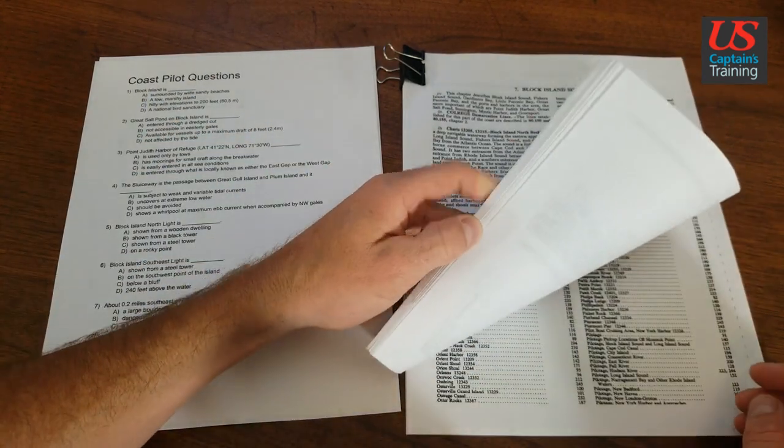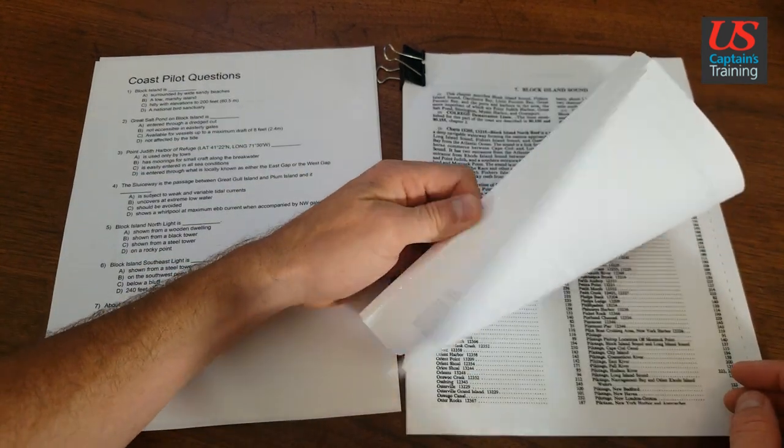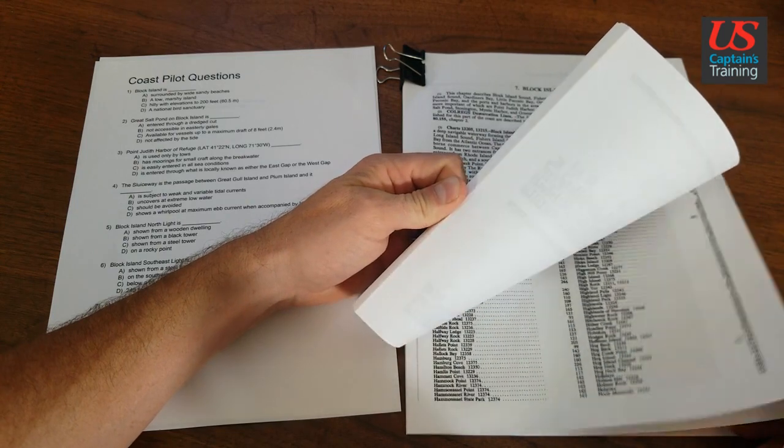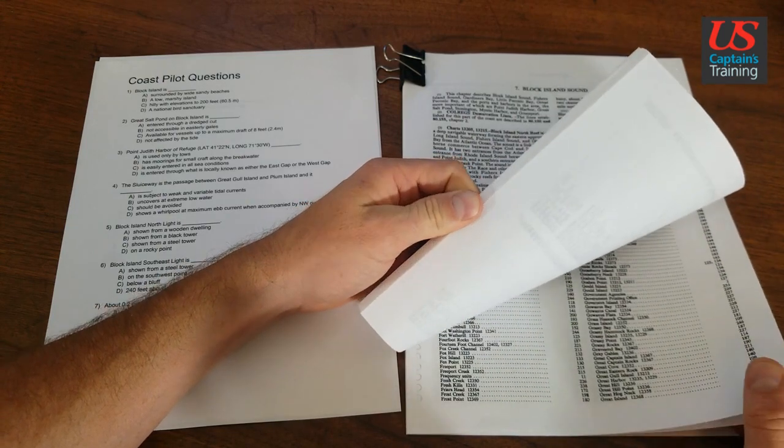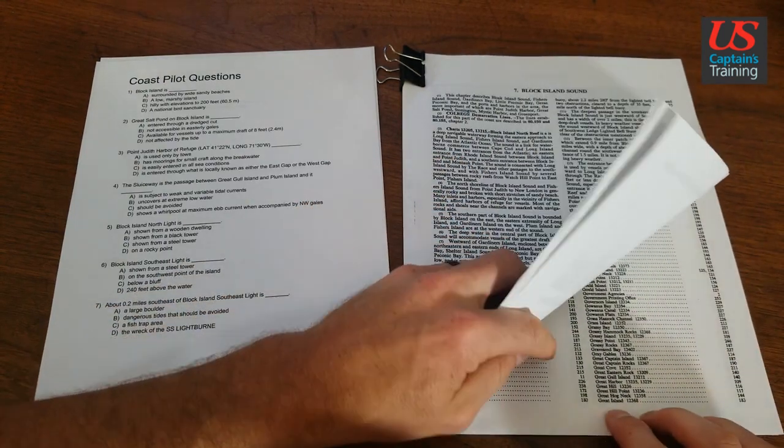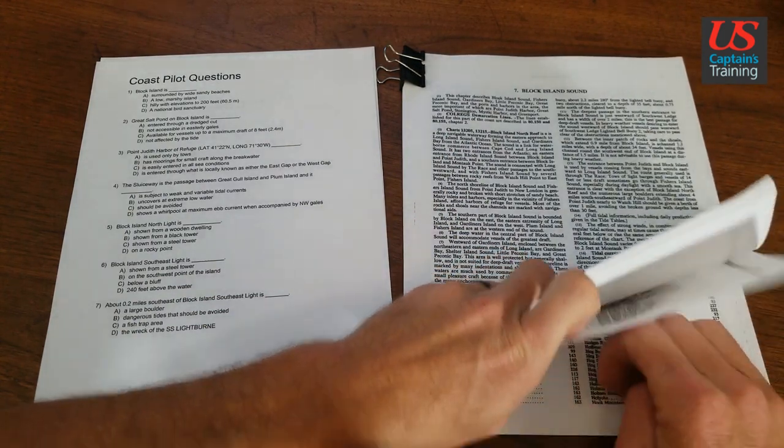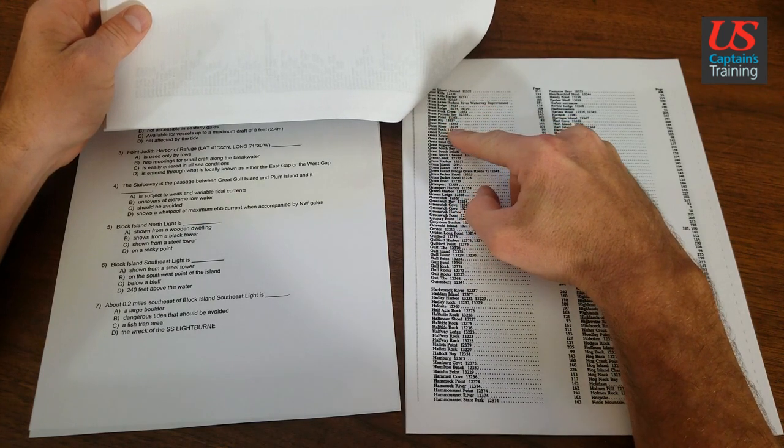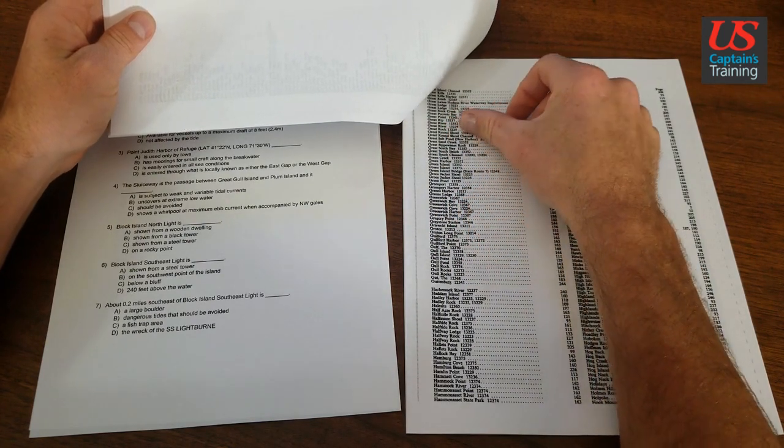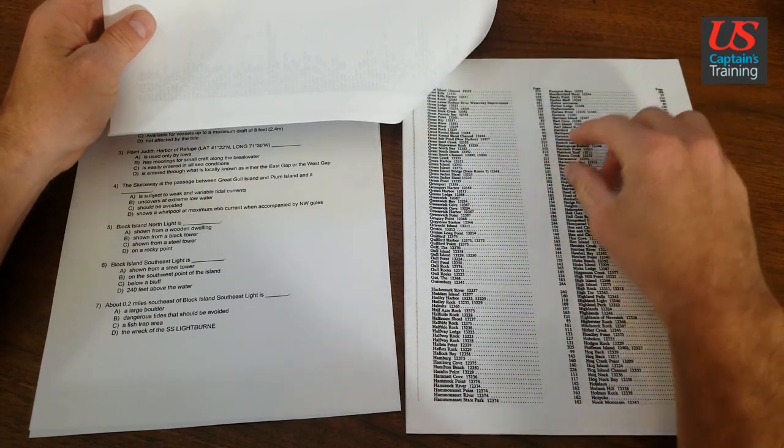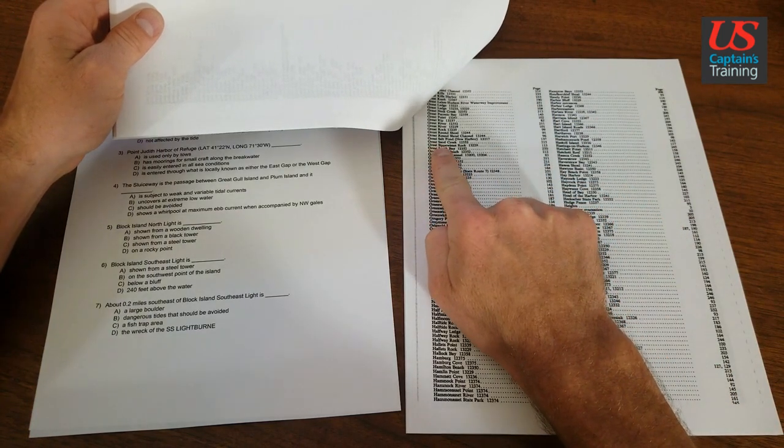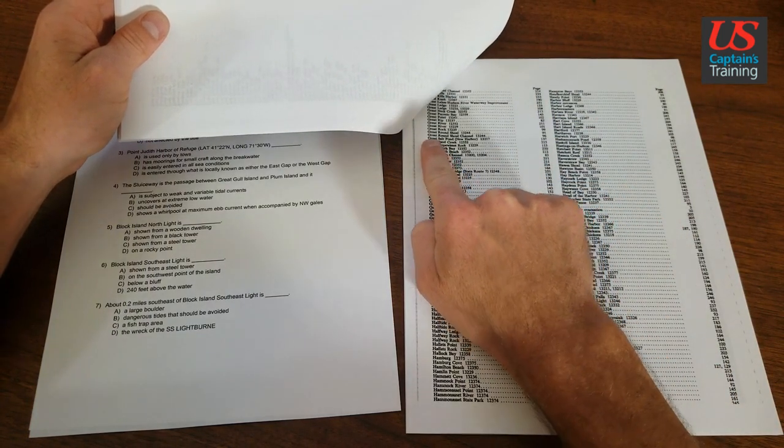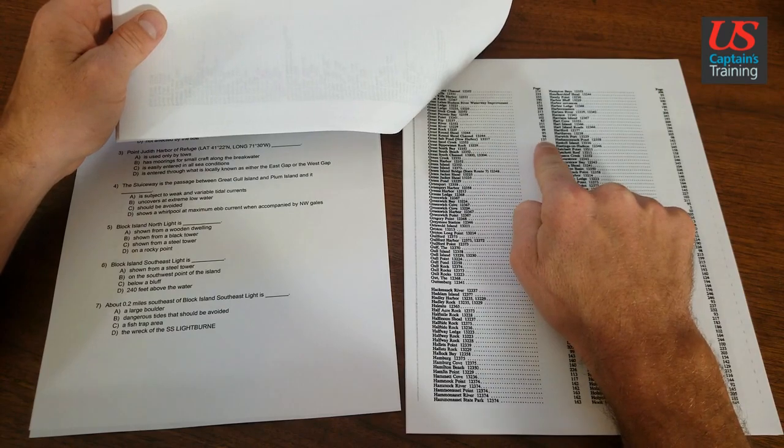Let's go back to the index again. Going through the letters... Great Island, Great River, lots of greats here. Great Salt Pond, page 137.